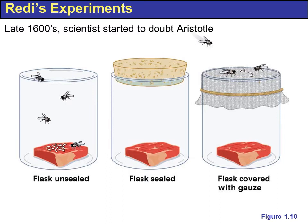Aristotle thought things spontaneously appeared. Scientists came after and tested these hypotheses — the tentative assumption was that things appeared, so they designed experiments to test that answer. In the late 1600s, scientists started to doubt Aristotle. This led Redi to run an experiment: he took three flasks. One flask was unsealed and had meat in it — flies landed on the meat, laid their eggs, and the eggs hatched into more flies.